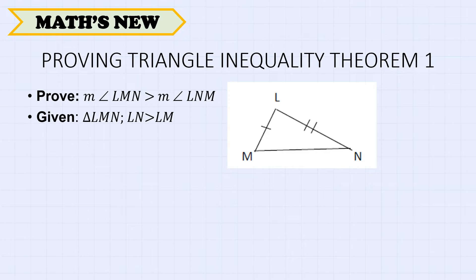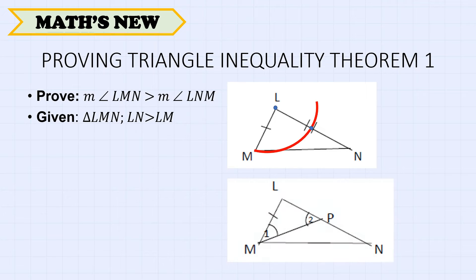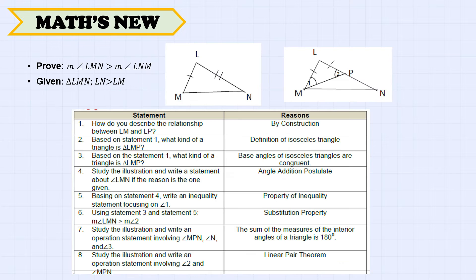Given triangle LMN, where LN is greater than LM, there is a need to make an additional construction to prove that the measure of angle LMN is greater than the measure of angle LNM. With a compass, we get a point on L, and with radius LM, mark a point P on LN, then connect M and P with a line segment to form a triangle.